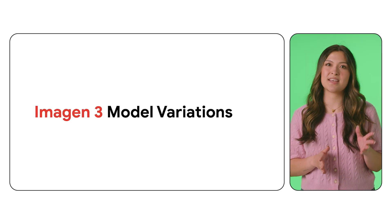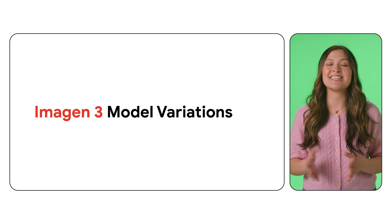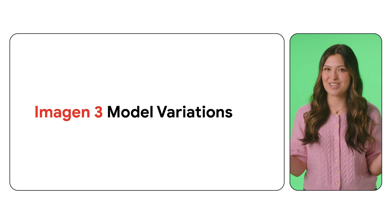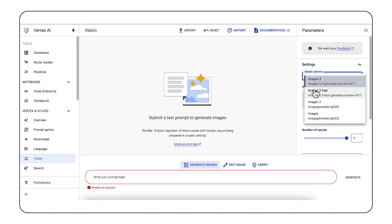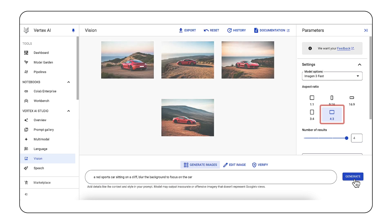With the previous examples, we've seen some of the great new capabilities of Imagine 3. Another great benefit is the option to optimize for latency and quality goals. This model comes in two different varieties: Imagine 3 and Imagine 3 Fast. To demonstrate the functionality of these two versions, let's look at the generated images from each model with the same prompt: a red sports car sitting on a cliff, blur the background to focus on the car. This prompt would also benefit from being generated in a landscape orientation, which we can configure from the interface simply by selecting one of the specified aspect ratios.